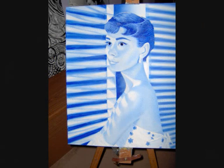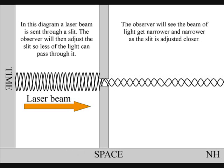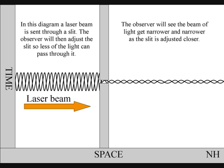This can explain what the observer actually sees. In this diagram, a laser beam is sent through a slit. The observer will then adjust the slit so less of the light can pass through it. The observer will see the beam get narrower and narrower as the slit is adjusted closer.